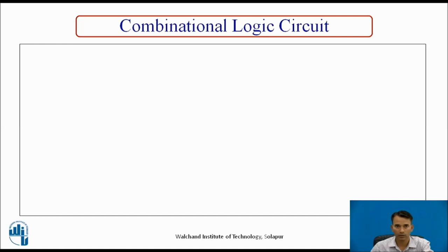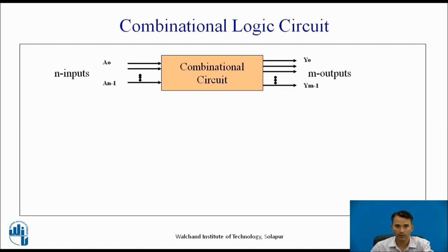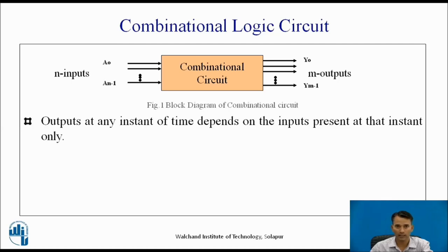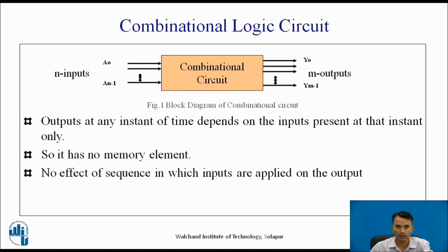A combinational logic circuit has n number of inputs, let us consider a0 to an-1, and m number of outputs, let us consider y0 to ym-1. In a combinational logic circuit, outputs at any instant of time depend only on the inputs present at that instant. The output does not depend upon previous or past values of input or output, so there is no need for memory — it has no memory element. There is also no effect of the sequence in which inputs are applied on the output.